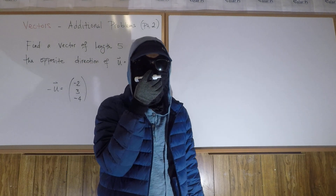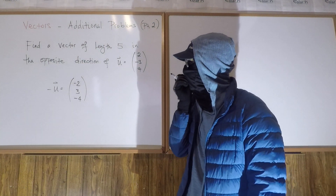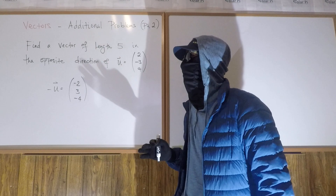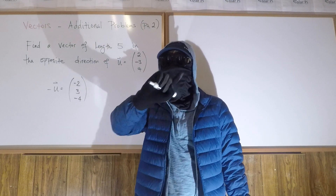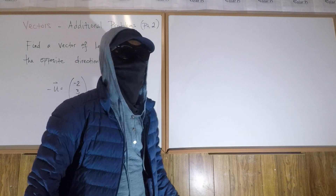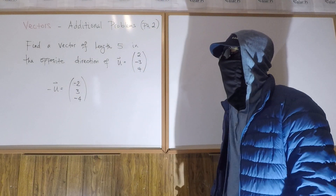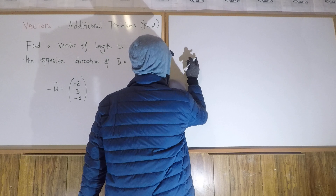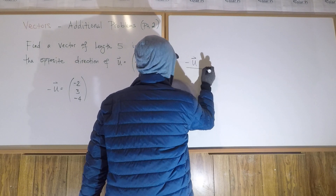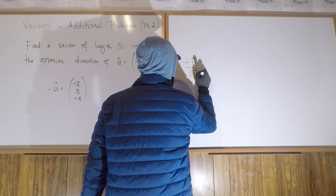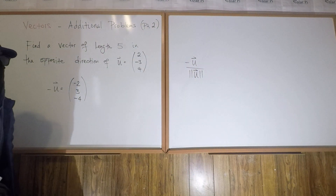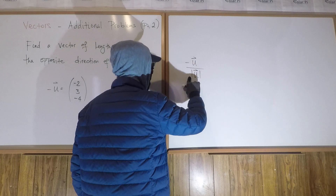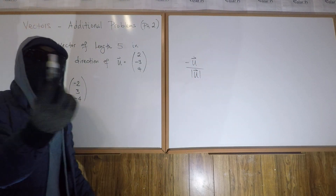Okay, cool. So we want negative u because one of the things we have to do is make sure this second vector is in the opposite direction of u. Now how do we ensure that this vector, which we know points in the opposite direction, is of length 5? I have an idea — let's first make it a unit vector, make it of length 1. We know how to make this a unit vector: it will be a unit vector if we do negative u over the length of u. The length of any vector is written with double bars or single bars around the vector — it's inconsistent in books, so I'll write single bars to use less marker.